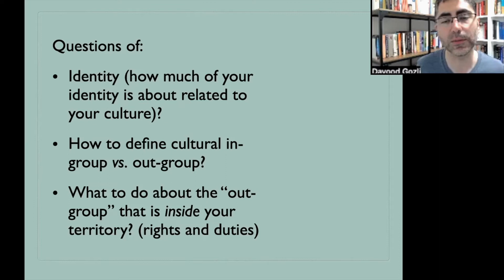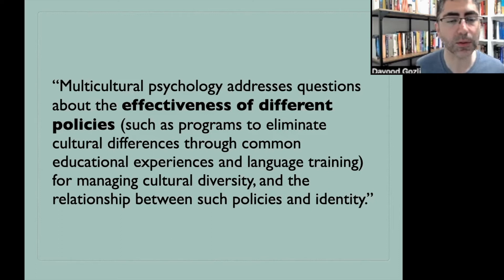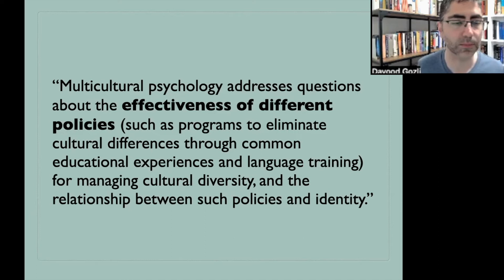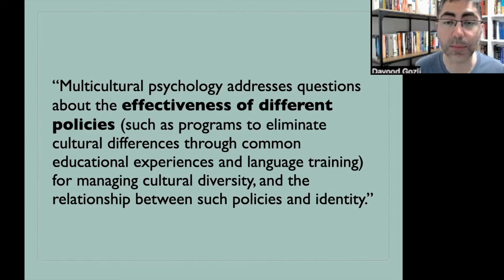Psychologists get to ask questions after the fact, after maybe some policies have been proposed or established. Here's a passage from the book: multicultural psychology addresses questions about the effectiveness of different policies for managing cultural diversity, and the relationship between such policies and identity, and whether such policies are based on assumptions that are psychologically viable. The aim of those policies is generally to eliminate or minimize the adverse effect of cultural differences through common educational experience and language training. One example is affirmative action, which is in effect in many different countries, not just in the US but also in places like Malaysia.